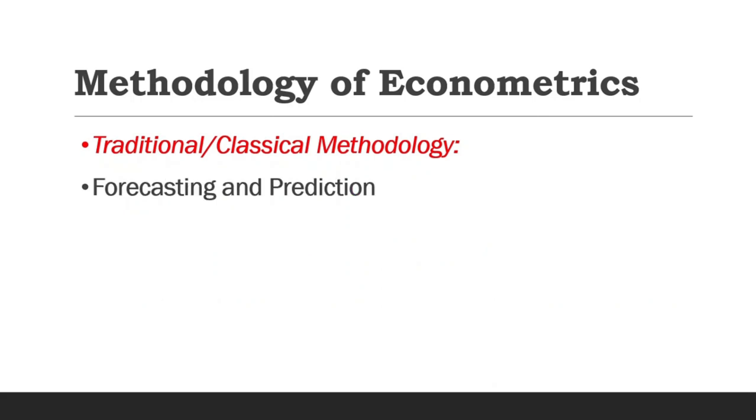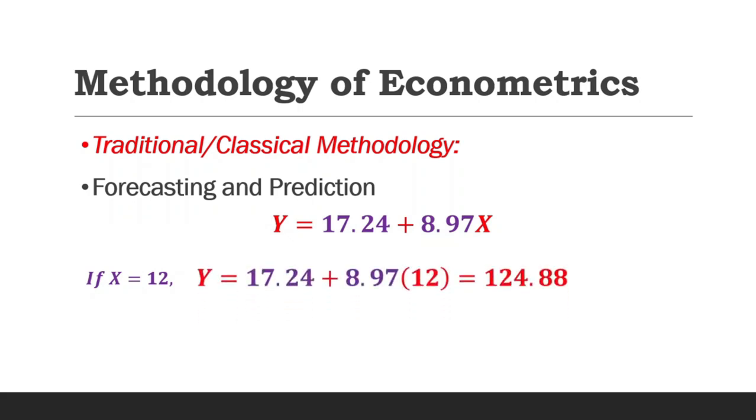And when that is satisfied, you can move to the next step, which is the forecasting and prediction. So with this econometric model, if we should assume that this particular year, income is actually 12, so X equals 12, we fix this into the model and we can obtain the value as 124.88.